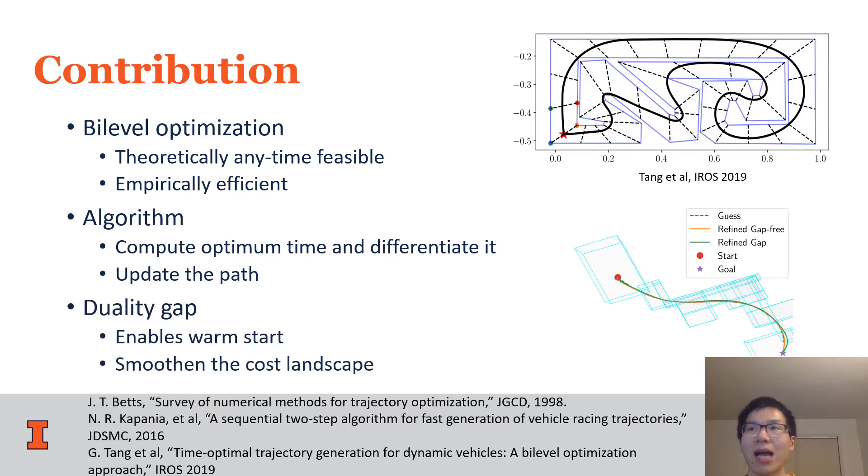In this paper, we introduced the duality gap approach, which helps bi-level optimization in two aspects. First, it enables warm start of interior point methods, which are used to compute the minimum time for path candidate, so inner optimization is more efficient. Second, it makes the function from a path to its minimum time a smooth function, so outer optimization becomes easier.